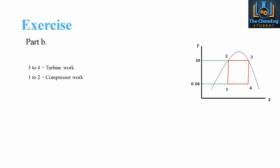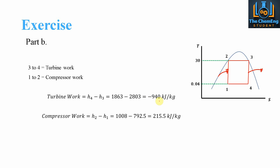For part B, from step 3 to 4 is the turbine work: W_turbine = H4 − H3 = −940 kJ/kg (negative because energy leaves the system). From step 1 to 2, the compressor work is W_compressor = H2 − H1 = 215.5 kJ/kg, which is the energy required to go from point 1 to point 2.